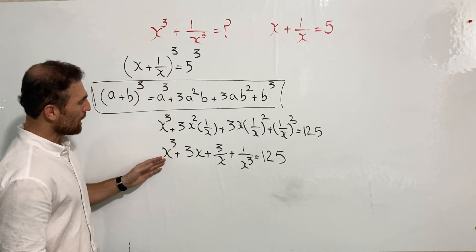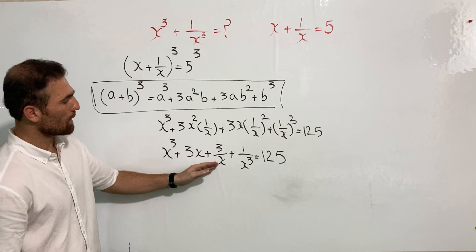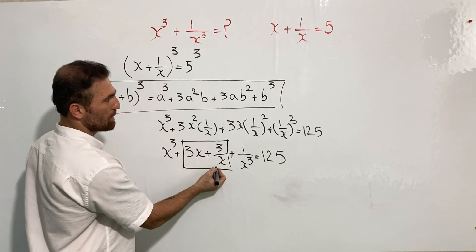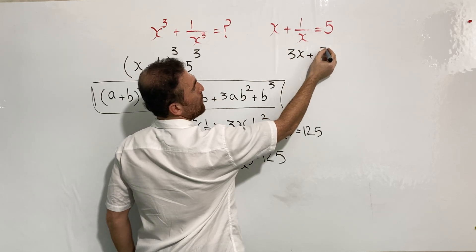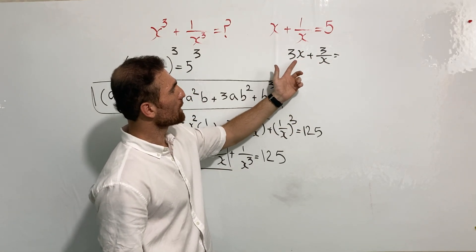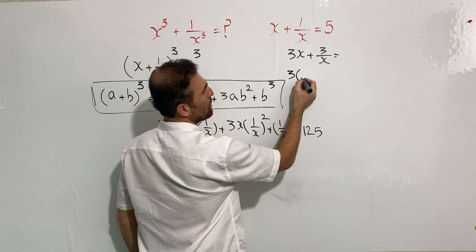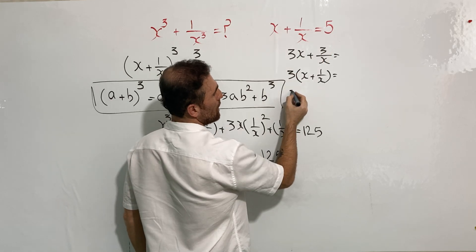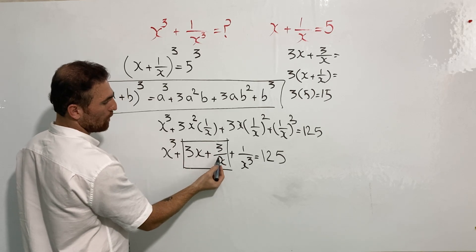Now we want to find x cube plus one over x cube, but here we have x cube plus three x plus three over x plus one over x cube. So we need to find the value of 3x plus 3 over x. Let's factor 3 out of that expression — it becomes 3 times x plus one over x, which equals 3 times 5, giving us 15.